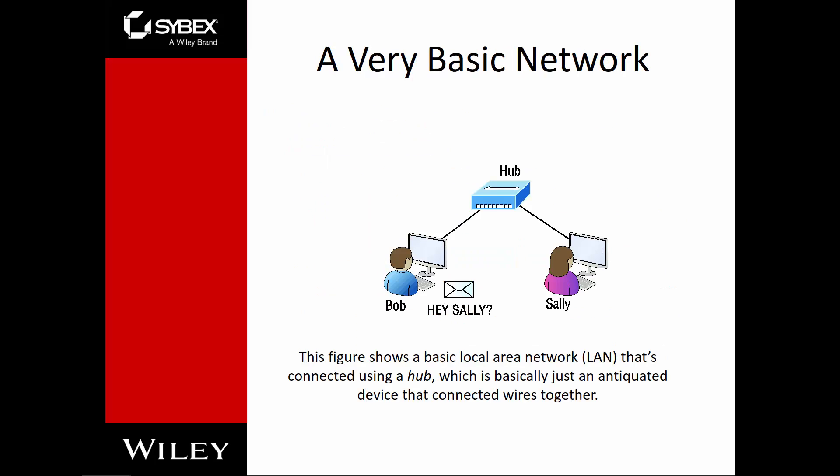A very basic network consists of at least two nodes and some type of interconnection. Here we have a hub. A hub is a multi-port repeater. It's antiquated — it's old. Anything that it gets on one port, it will send out every other port, even if it's not destined for everyone.